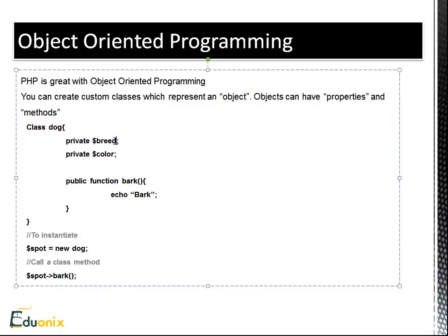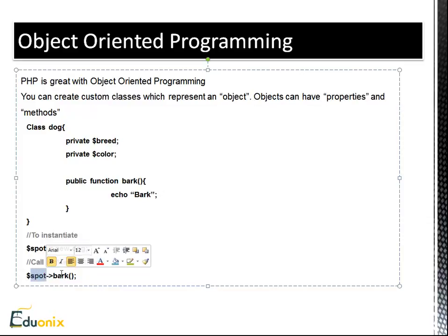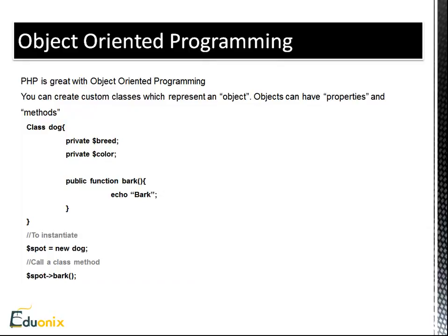You might see the keywords 'private' and 'public' — these are access identifiers. If a property is private, you cannot access it outside of the class. If it's public, you can directly access and assign values to it. What's popular in PHP is to have your methods be public and use a function to access your properties rather than accessing them directly. To instantiate an object from a class, you create a variable set equal to 'new' followed by the class name — in this case 'Dog'. To call a method, you use the variable followed by the arrow operator (dash and greater-than) and then the method name, such as bark.